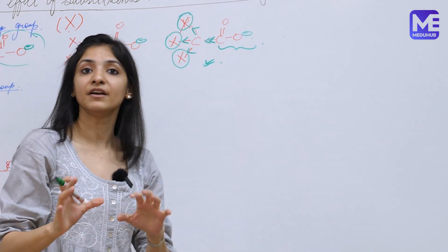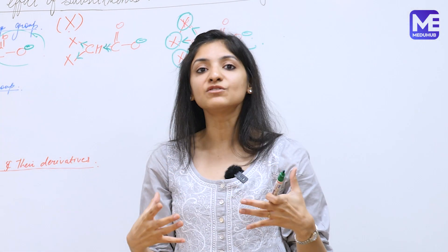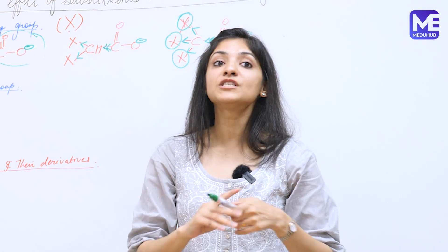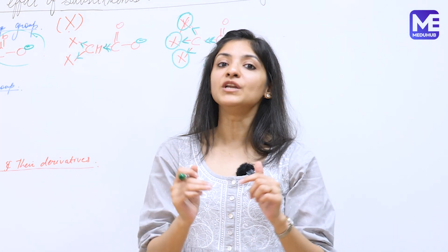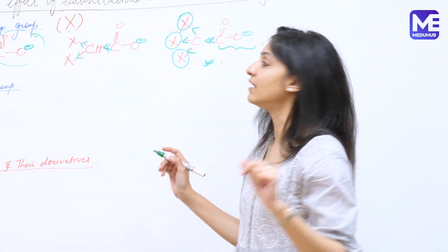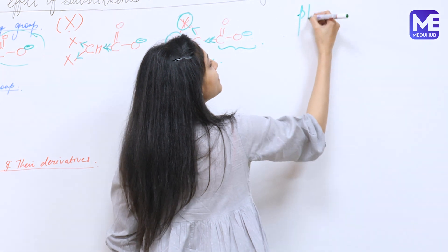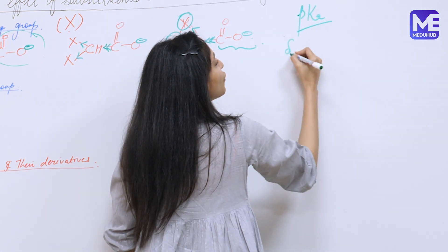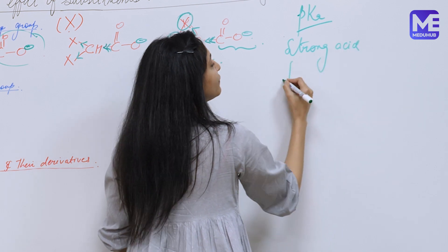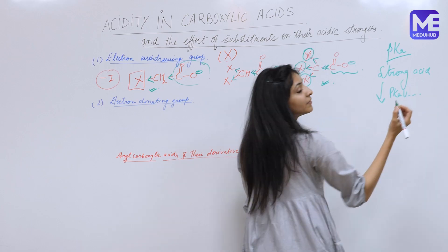You should also know that if a compound is more acidic, its acid dissociation constant Ka will be very high, and consequently its pKa value will be very low, because pKa is minus log of Ka. So the stronger the acid, the lower will be the pKa value.